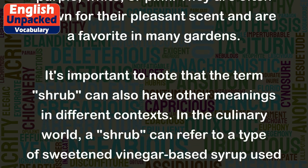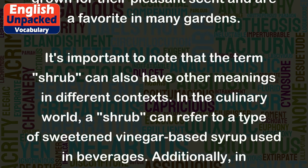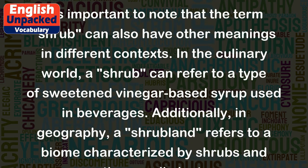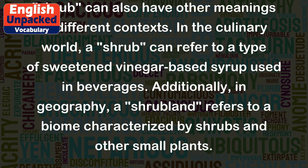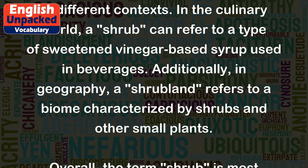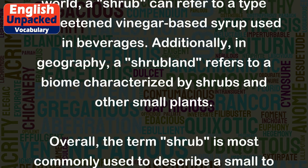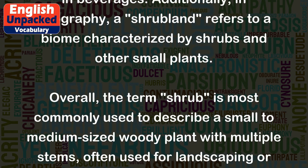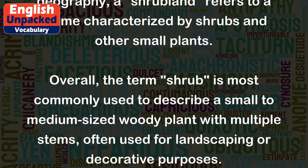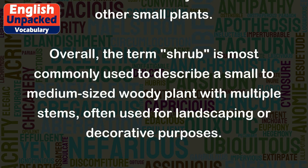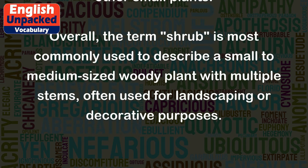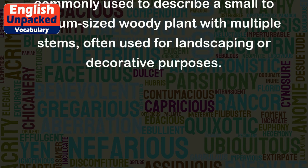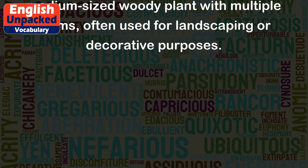It's important to note that the term 'shrub' can also have other meanings in different contexts. In the culinary world, a 'shrub' can refer to a type of sweetened vinegar-based syrup used in beverages. Additionally, in geography, a 'shrubland' refers to a biome characterized by shrubs and other small plants. Overall, the term 'shrub' is most commonly used to describe a small to medium-sized woody plant with multiple stems, often used for landscaping or decorative purposes.